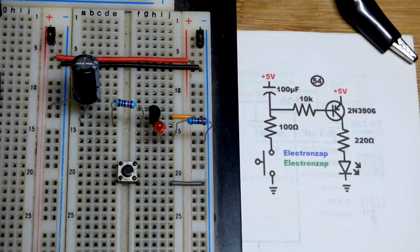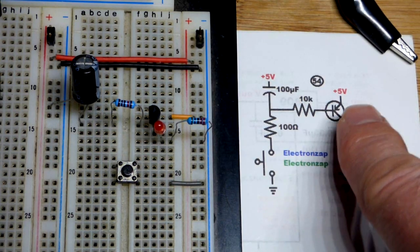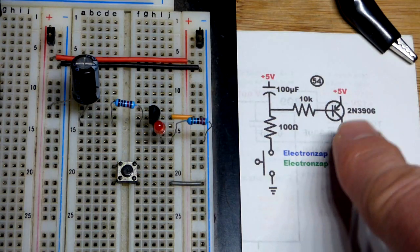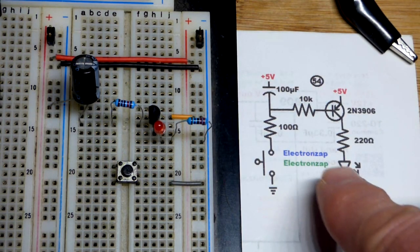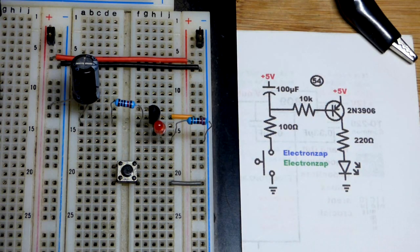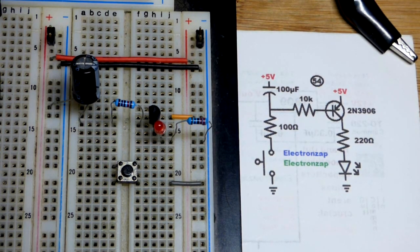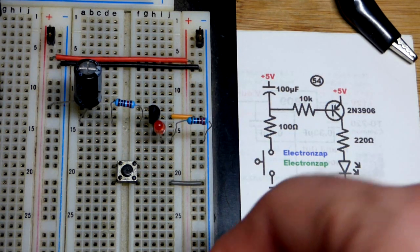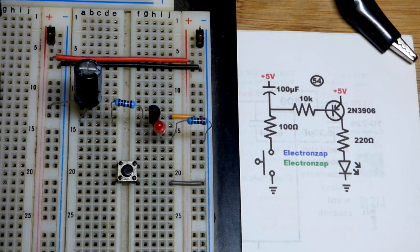And remember, the PNP bipolar junction transistor is a high side switch. It's on the high side of the power when it's used as a switch. NPN bipolar junction transistor is the opposite. NPN bipolar junction transistor is a low side switch. Something to be aware of. That's why there's the two of them. Sometimes you want a high side switch and sometimes you want a low side switch.